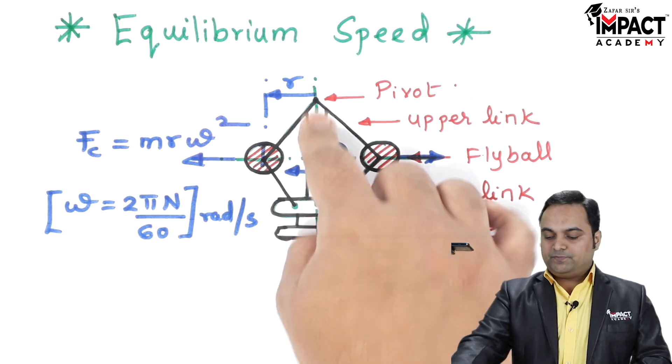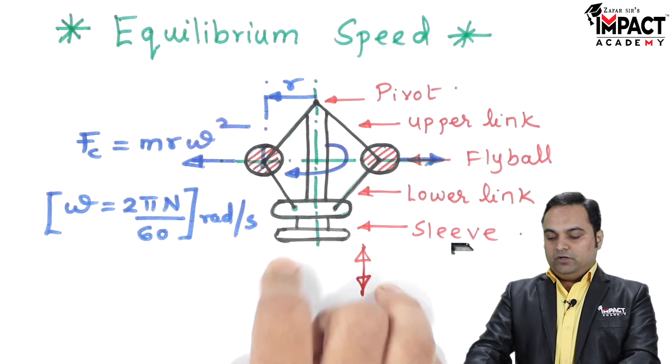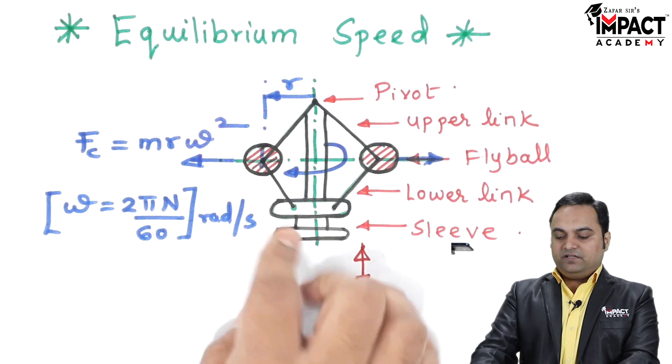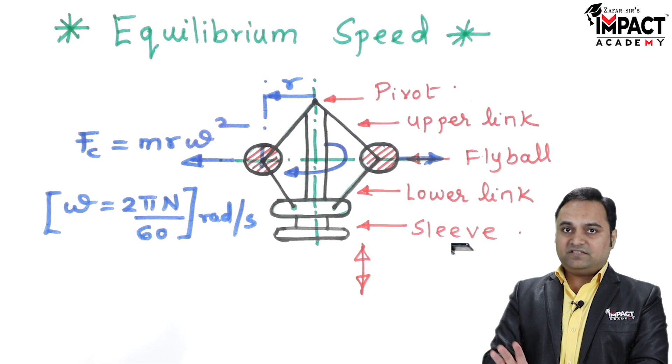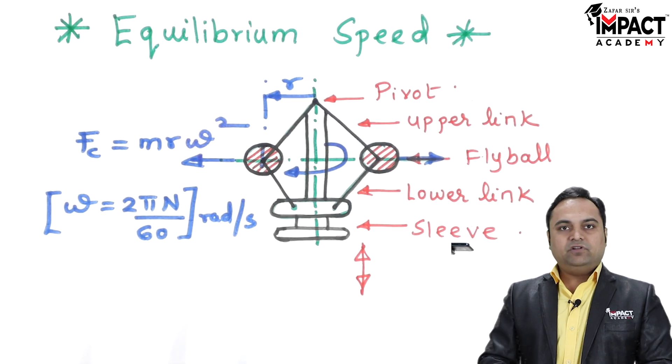...so that speed of the spindle would be called the equilibrium speed. Similarly, we can have equilibrium speed at the minimum radius as well as at the maximum radius.